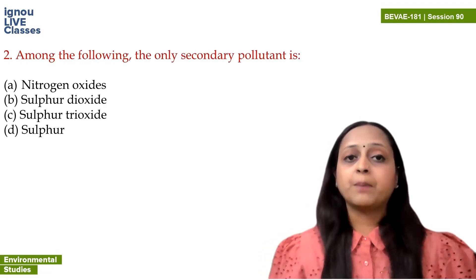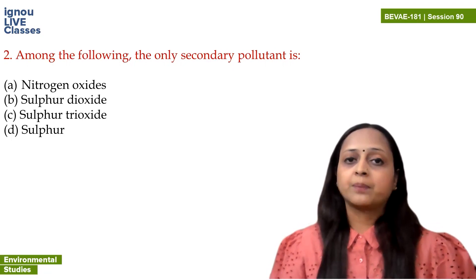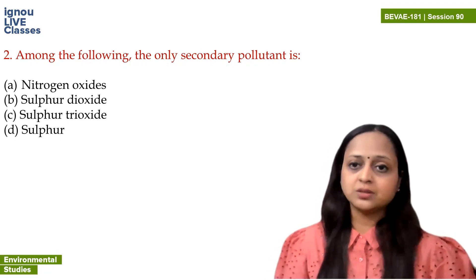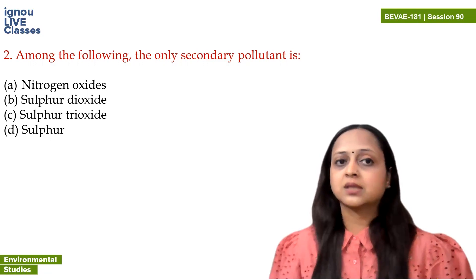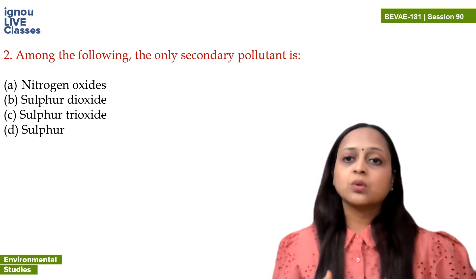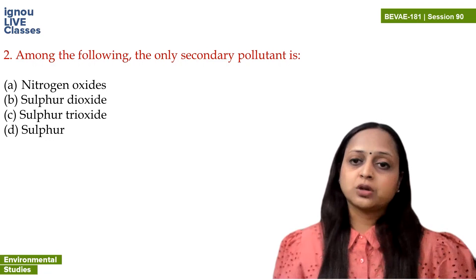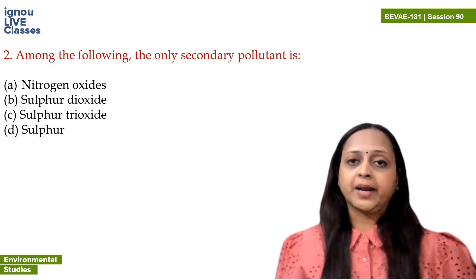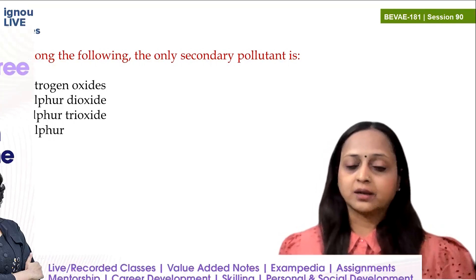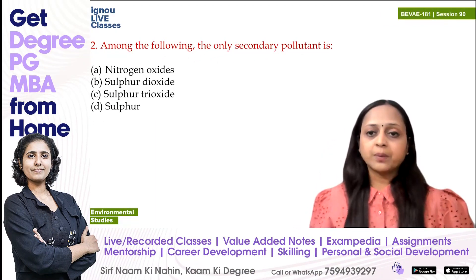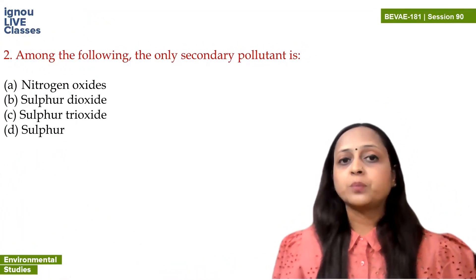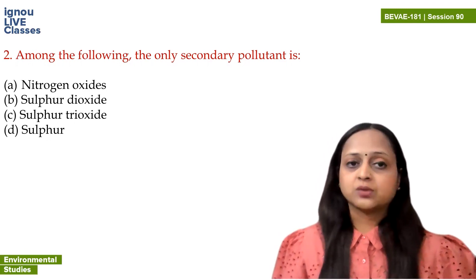Next question: among the following, which is the only secondary air pollutant? For more information on secondary air pollutants, you can go back to session 89. Secondary air pollutants have no direct source - they are a combination of two pollutants or two components of air. Primary air pollutants have a direct source from manmade or natural activity.